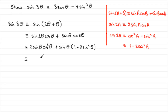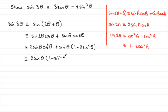Now all we need to do is expand this bracket. We write the first term as 2 sine θ times cos squared θ. We need everything in terms of sine, so cos squared θ — from the identity — is 1 minus sine squared θ. And for the last bracket, we have sine θ times bracket 1 minus 2 sine squared θ.